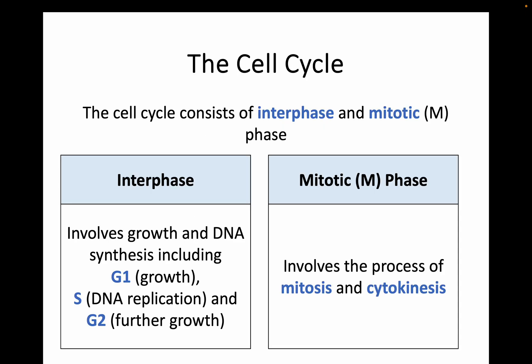The full cell cycle has really two main phases. First of all there's a part called interphase and then the mitotic phase — mitosis essentially itself. The mitotic phase is sometimes abbreviated to the M phase, and we'll be going through all these different parts in the next couple of sub-key areas as well.